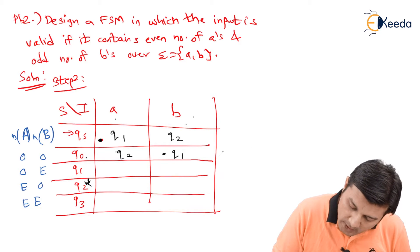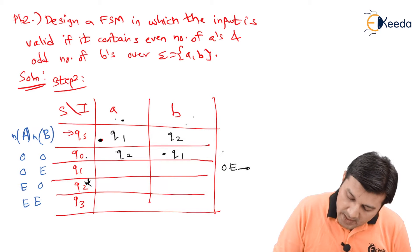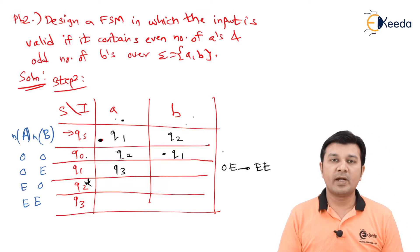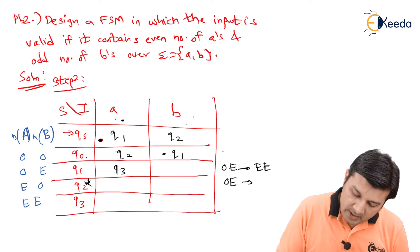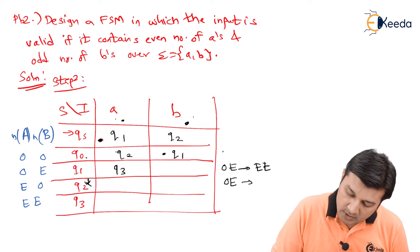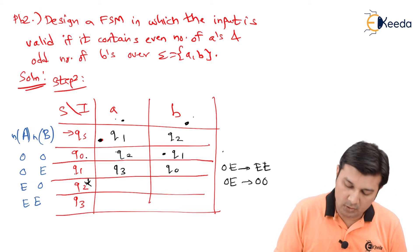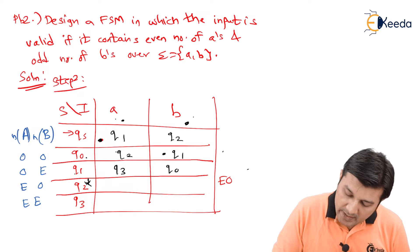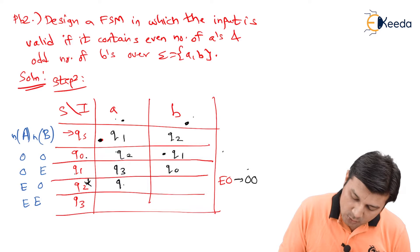In Q1, the combination is odd-even. When input A arrives, odd A's become even — making it even-even, which is Q3. When input B arrives in Q1, the even B's become odd — making it odd-odd, which is Q0. In Q2, the combination is even-odd. When input A arrives, even A's become odd — making it odd-odd, which is Q0.